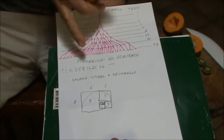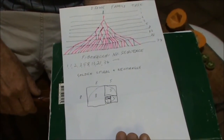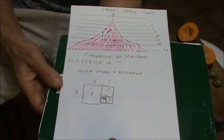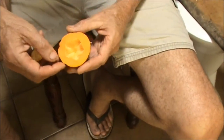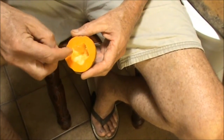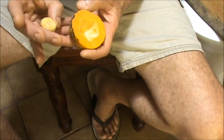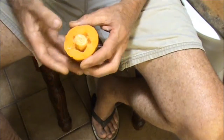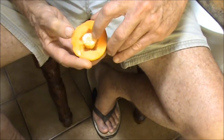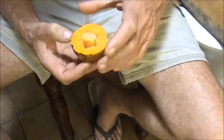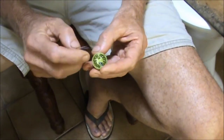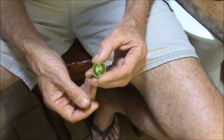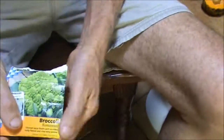I'm finding the numbers one, two, three, and five pretty commonly — I'm not finding eight and thirteen yet. For example, a pawpaw cut open has five segments inside. A banana has three segments inside. And this cherry tomato has two segments.